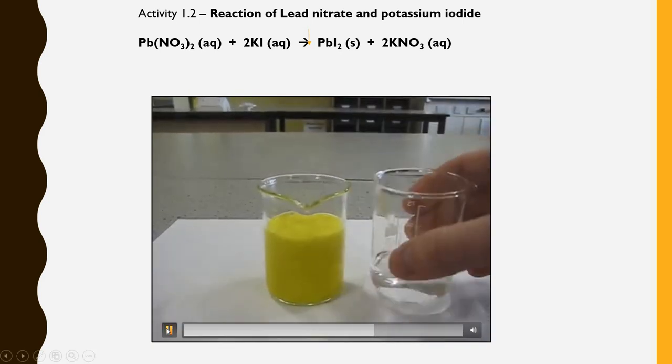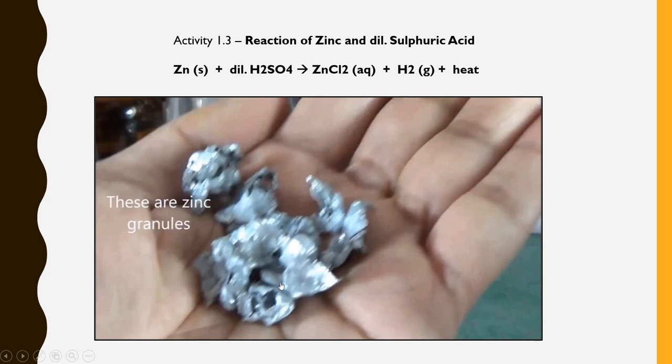Yes you can observe yellow color solution is formed. When you leave this undisturbed for a while you will find that yellow precipitate of lead iodide will be formed. So a formation of precipitate is there as well as there is a change in color.